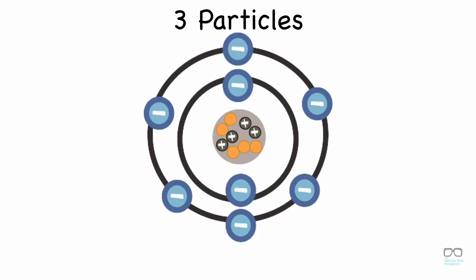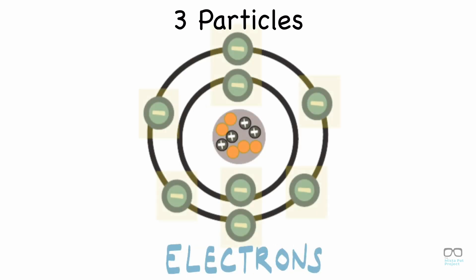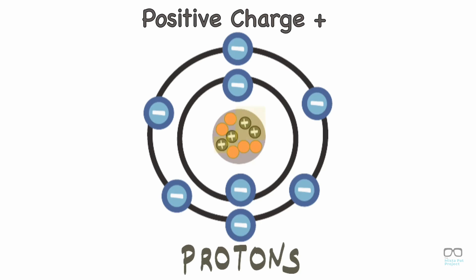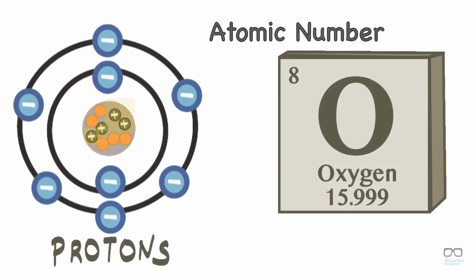An atom is made of three particles: protons, neutrons, and electrons. A proton is a positively charged particle that determines the chemical properties of an atom. This just means that the number of protons tells us what type of atom we have. The number of protons is also called the atomic number and is found right here on the periodic table.